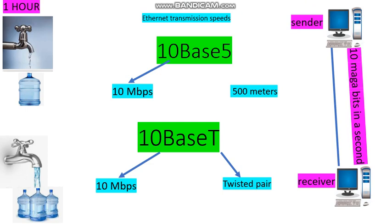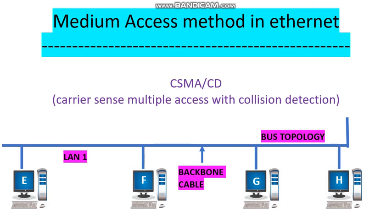Now let us see what is the medium access method used in Ethernet. For example, if station E wants to send data to station F, the station E should have access to the medium or channel in order to send the data. To access the medium in Ethernet, the stations use the CSMA/CD method, that is, Carrier Sense Multiple Access with Collision Detection. I will explain this method in the next video.